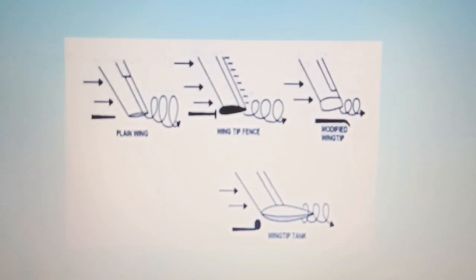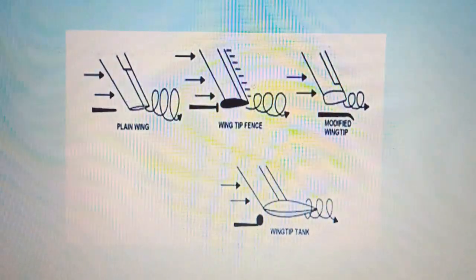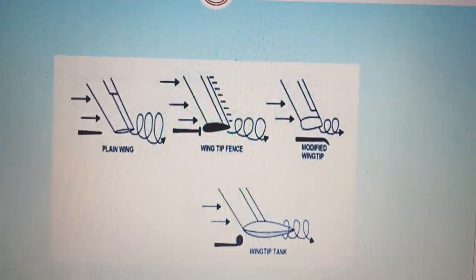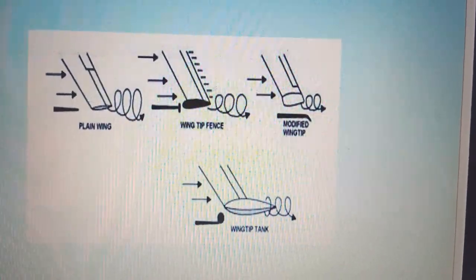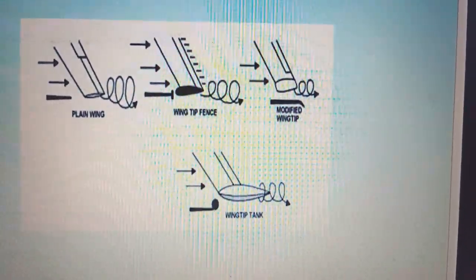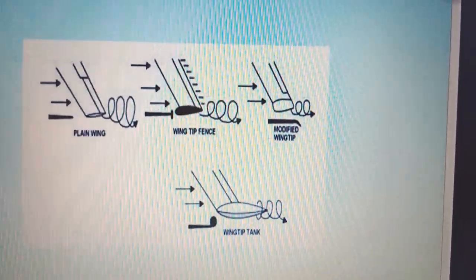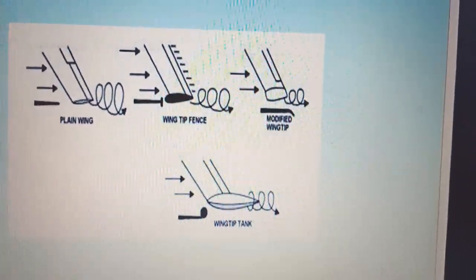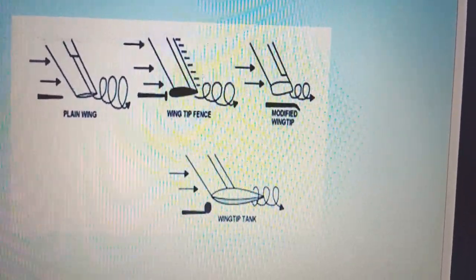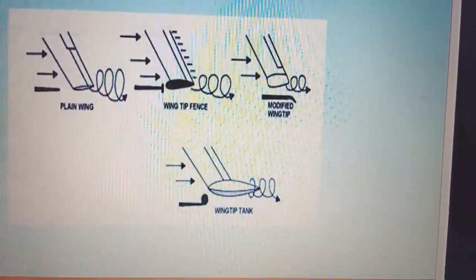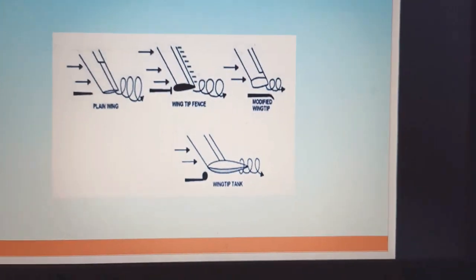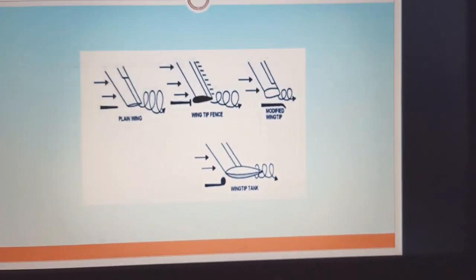Some diagrams here mention various wing tip devices: wing tip fence — showing vortex strength, modified wing tip, and wing tip tank where a tank is mounted at the wing tip. These are different approaches to wing tip modification to reduce induced drag.